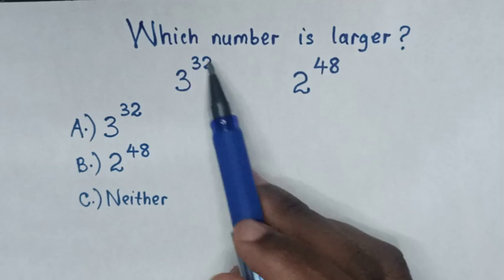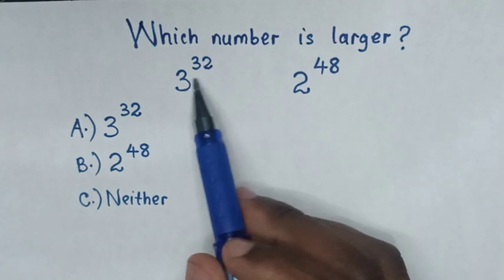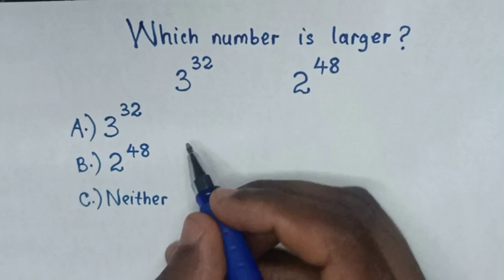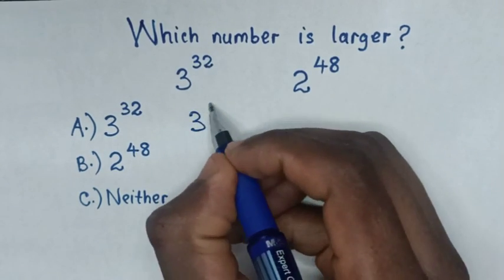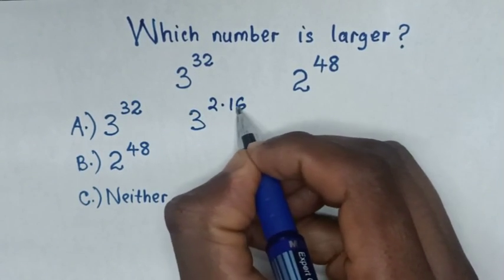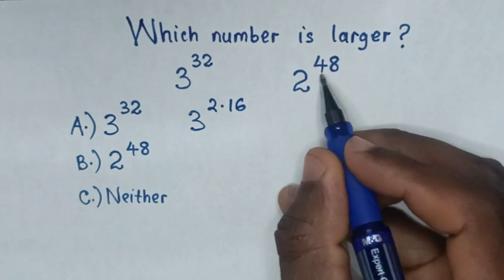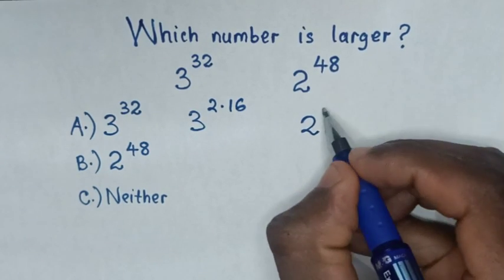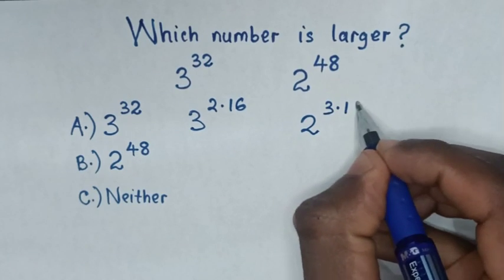So first you make these exponents to have same power. Now, from 3 power 32 is same as 3 power 32 is same as 2 times 16. Then from 2 power 48 is same as 2 power 48 is same as 3 times 16.